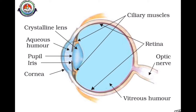The first part is the crystalline lens. It is composed of a fibrous, jelly-like protein material. It is converging in nature and focuses the incoming light rays from the object onto the retina. This crystalline lens is a convex lens, that is, a converging lens.